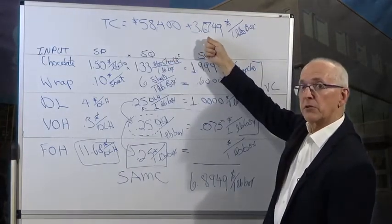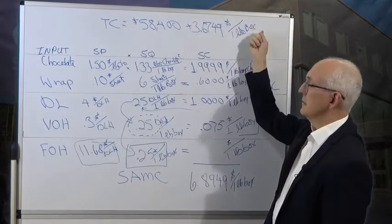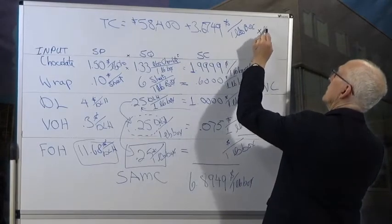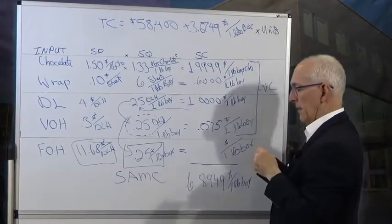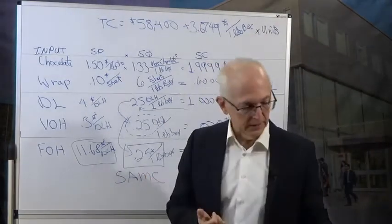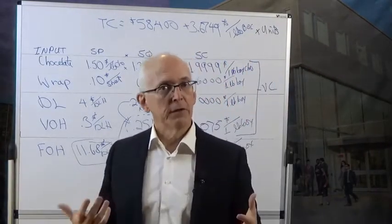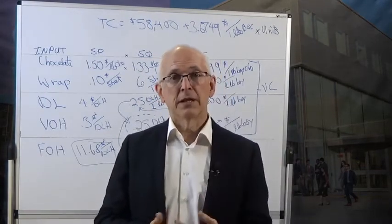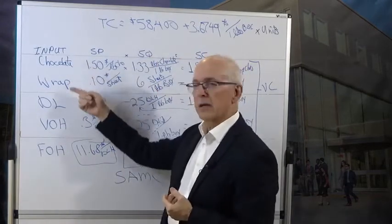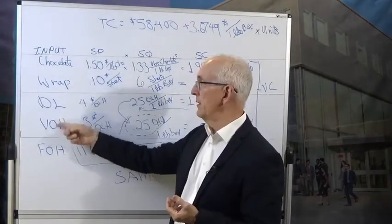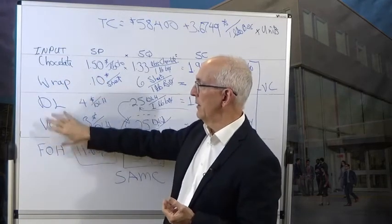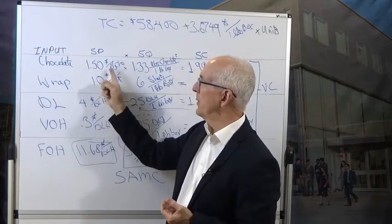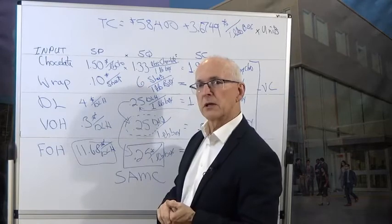Now you have the complete standard cost card: it has a title, line items with units attached, the SAMCI (Standard Absorptive Manufacturing Cost) at the bottom, and below that the manufacturing cost equation: total cost equals total fixed cost plus variable cost per unit times number of units. That concludes problem 7.56 — a very important problem. Don't do this one first though; do problem 7.54 a couple of times until it's really solid, then come back and do this.